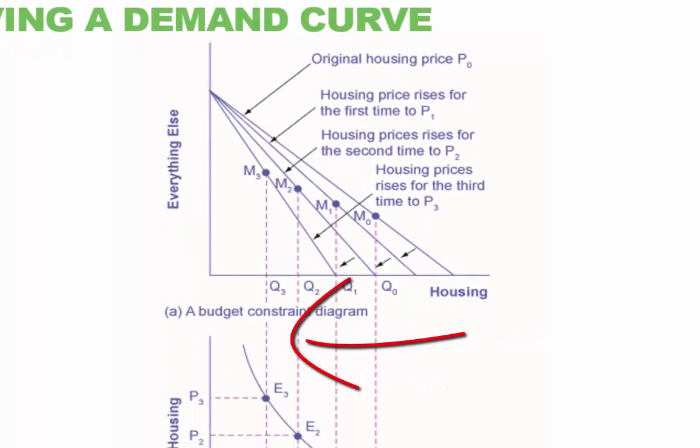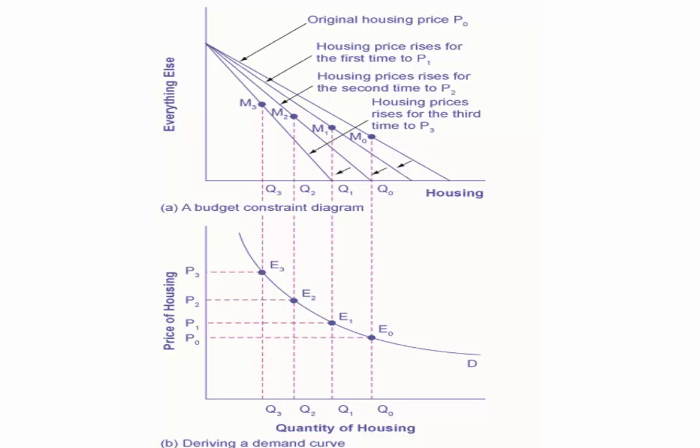Ceteris paribus. The demand curve graphs each combination of the price of housing and the quantity of housing demanded, ceteris paribus. Indeed, the quantities of housing are the same at the points on both upper and lower graphs. Thus, the original price of housing, P0,